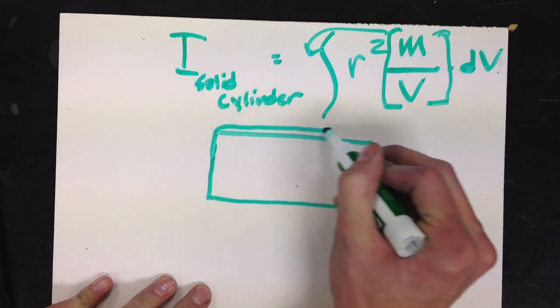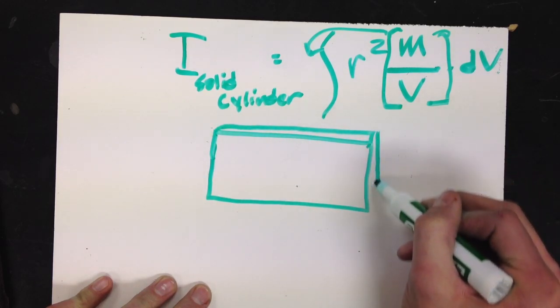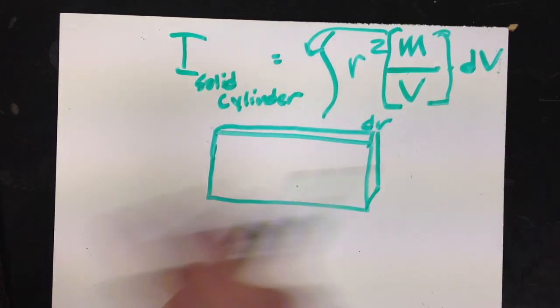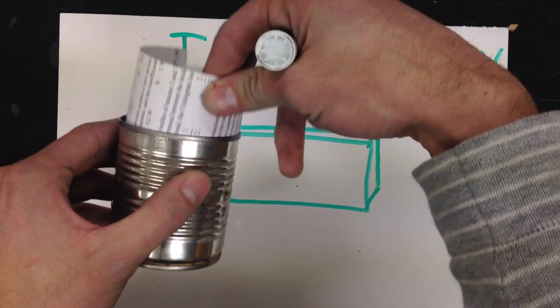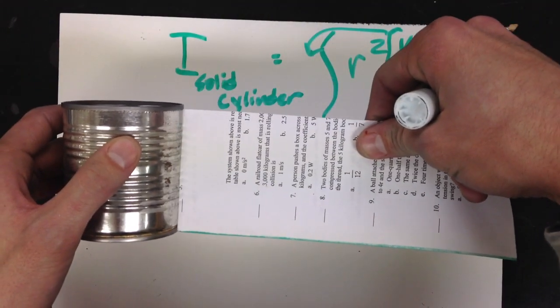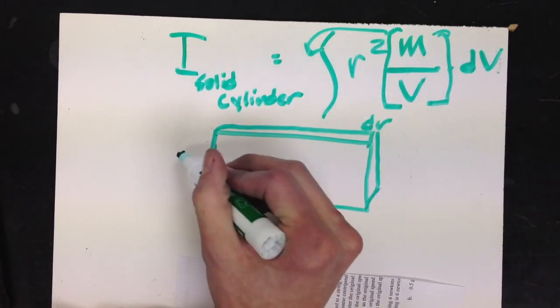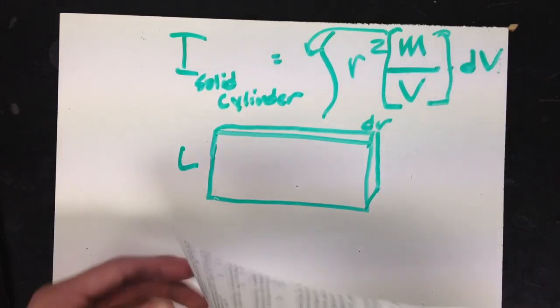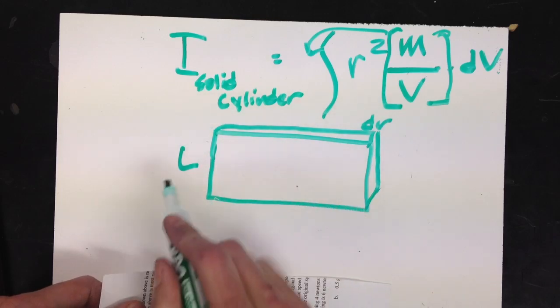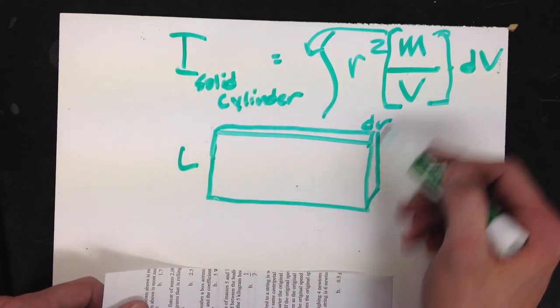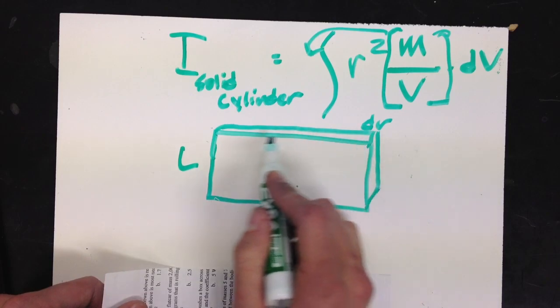So it has a thickness, which we said was dr. And if I look, if I take the sheet out, well, it's got a length L, the same as my cylinder. Well, to get volume, I need length times width, or the thickness here, but I need this dimension.